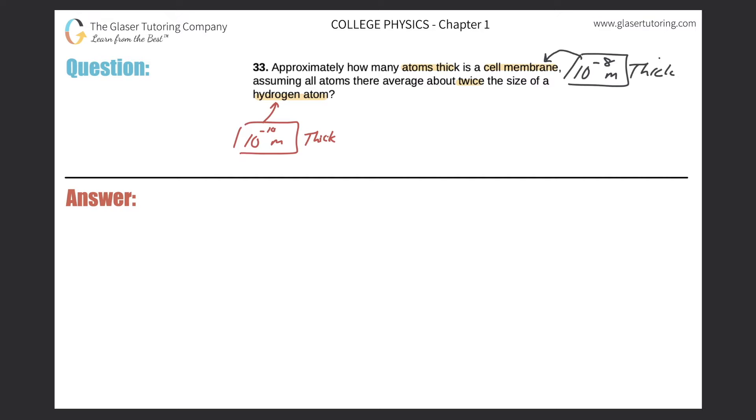So now we have enough information to start the problem. They want to know how many atoms there are in a cell membrane, and they tell us that all the atoms there average about twice the size of a hydrogen atom. So if we know the size of a hydrogen atom, we could multiply that by 2 to find the average size or thickness of the cell membrane atom.